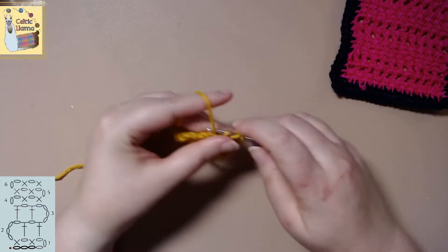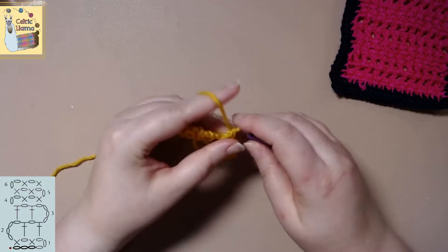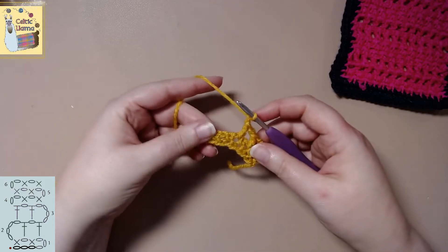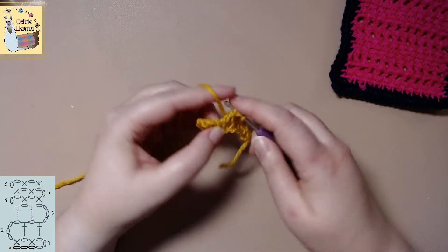So double crochet in the chain one space. Chain one. Double crochet in the next chain one space.